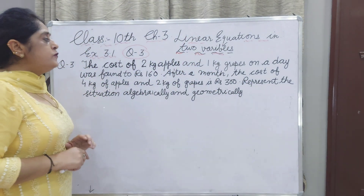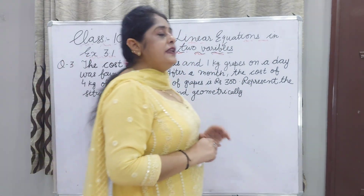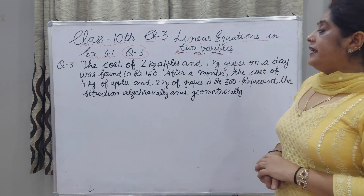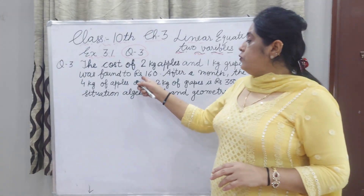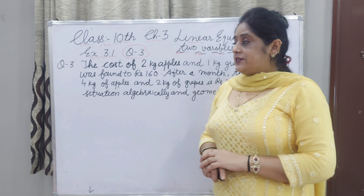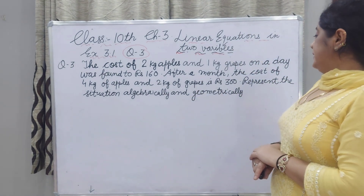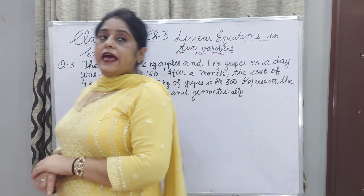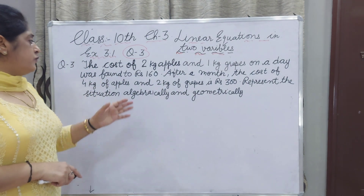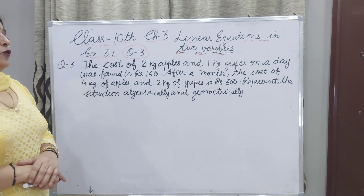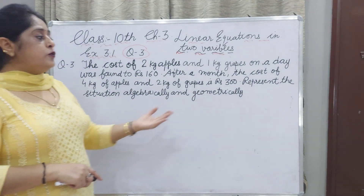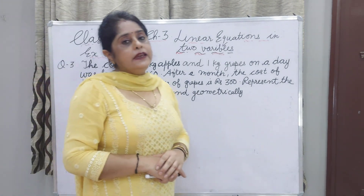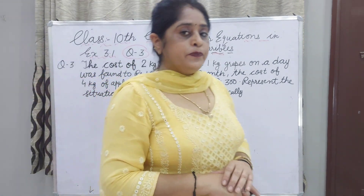The cost of 2 kg apples and 1 kg grapes on a day was found to be Rs. 160. After a month, the cost of 4 kg of apples and 2 kg of grapes was Rs. 300. We have to represent this situation algebraically and graphically.